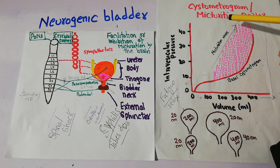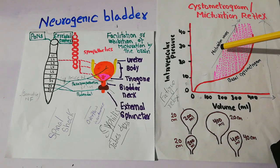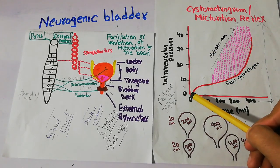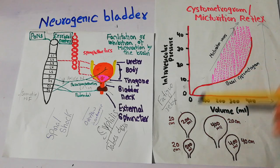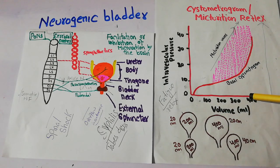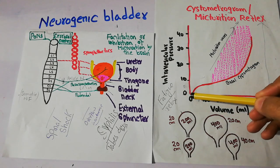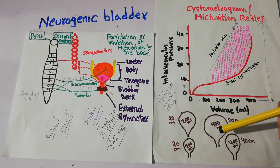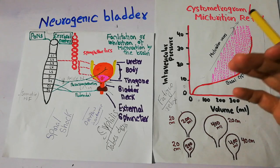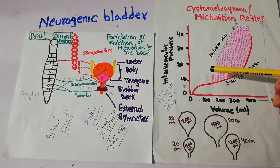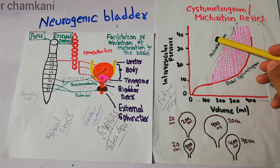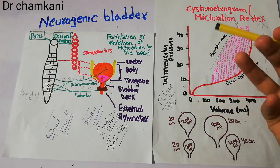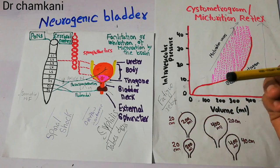Micturition reflex occurs when there are micturition waves or micturition contractions in the urinary bladder. As the amount of urine in the urinary bladder increases — say from 200 ml to 400 ml — the pressure in the urinary bladder also keeps increasing. Apart from the tension in the bladder wall, there are contractions or waves known as micturition waves, which cause periodic contraction of the urinary bladder and are important for the micturition or urination process.